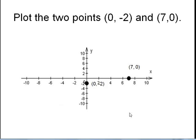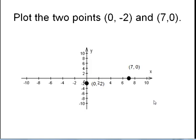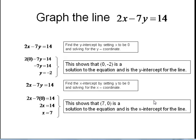To graph the equation or linear function, I'm going to plot the two points. Here is my y intercept when x is 0, y is negative 2, and here's my x intercept, x is 7, y is 0. I connect the two points with a straight line, and I have the graph of my linear function, 2x minus 7y equals 14.